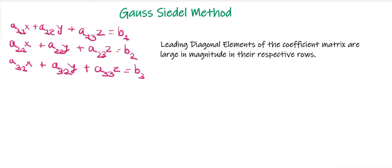Firstly, let's understand the working rule. Suppose we have the equations: a11x + a12y + a13z = b1, a21x + a22y + a23z = b2, and a31x + a32y + a33z = b3. The first condition we have to check is the same as in the Gauss-Jacobi method. Here we can see the diagonal elements: a11, a22, and a33.